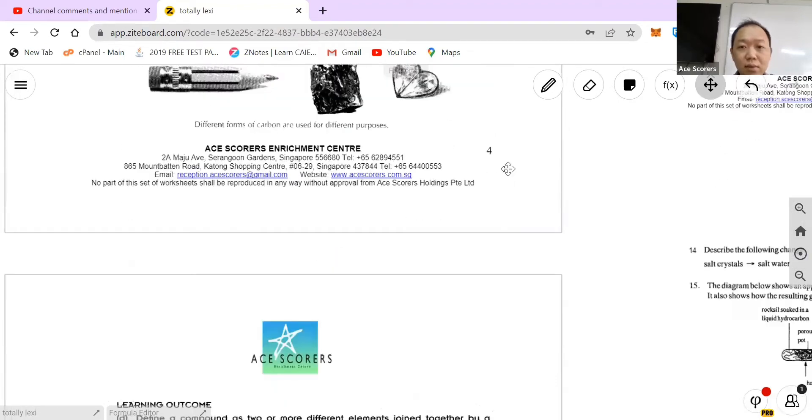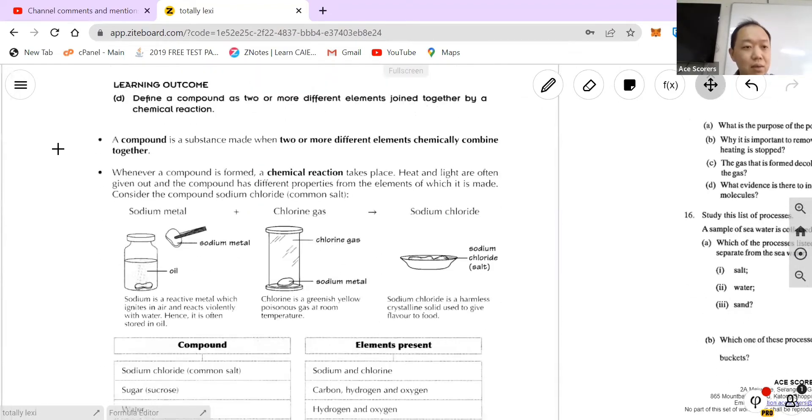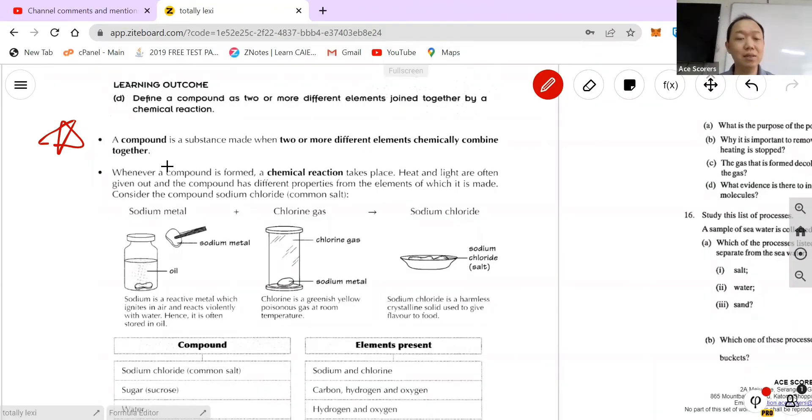Next, of course is the definition of a compound. So this is a definition that I always like to ask my students. What is the definition of a compound? It's a substance made of two or more different elements chemically combined, or they cannot be separated by physical methods. So you need to know what are the examples of compounds.